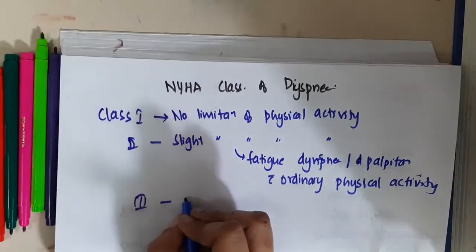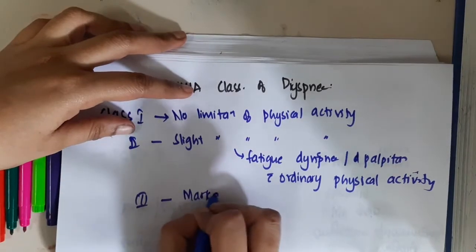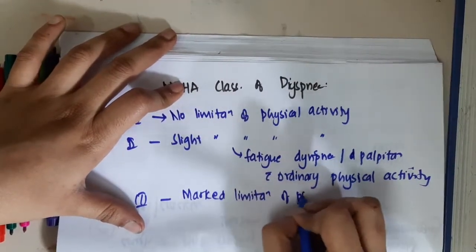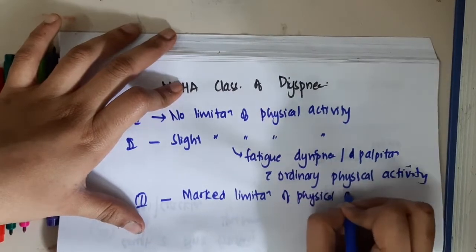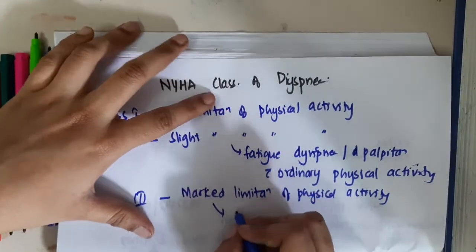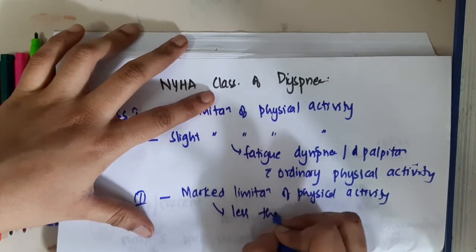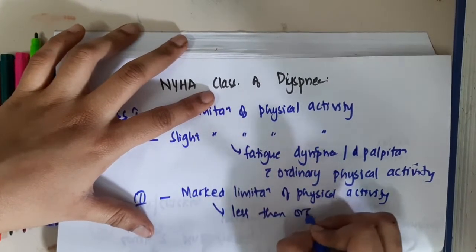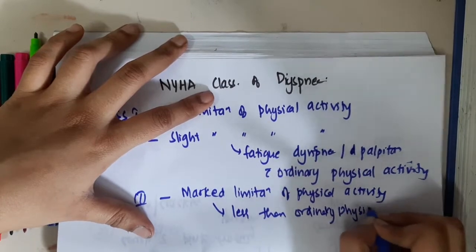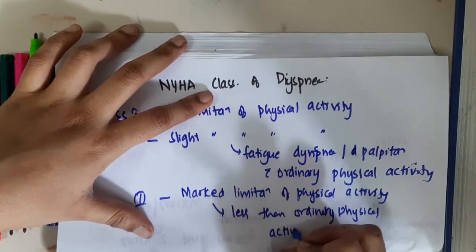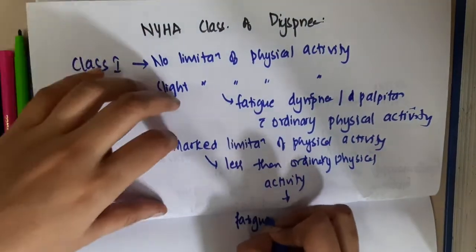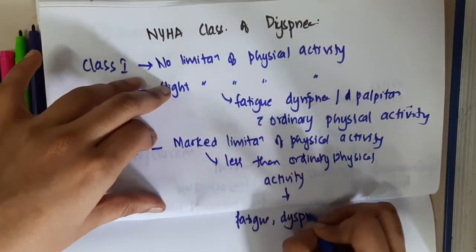In Class 3, there is marked limitation of physical activity. This means the patient doing less than ordinary physical activity will result in fatigue, dyspnea and palpitations.